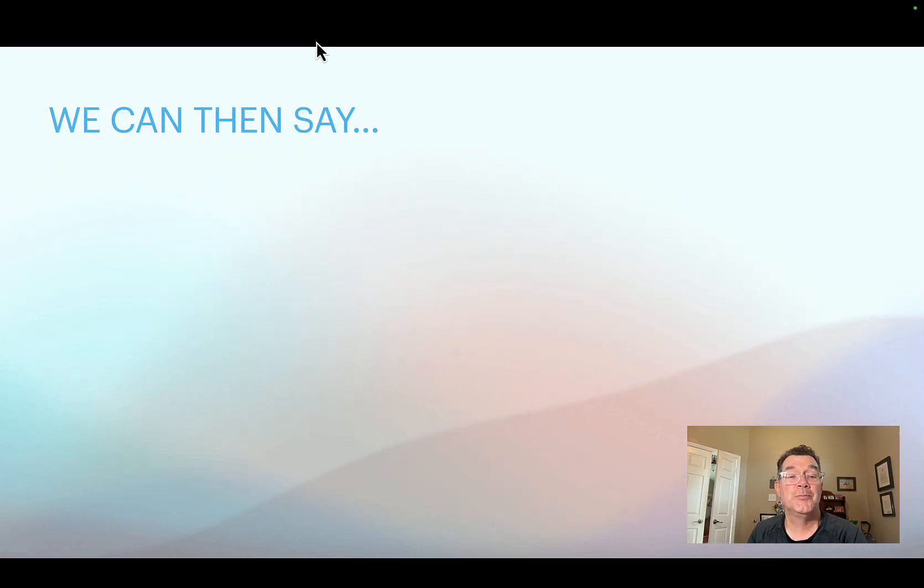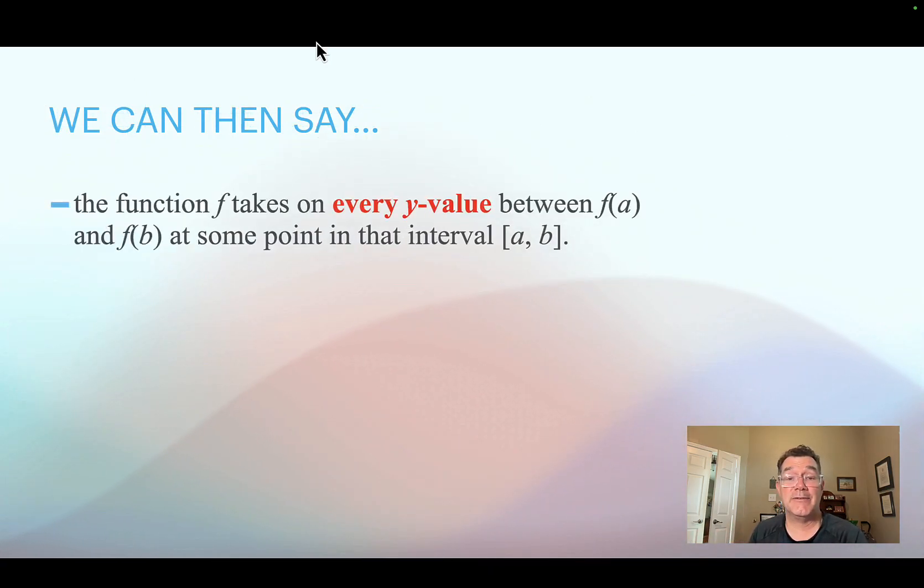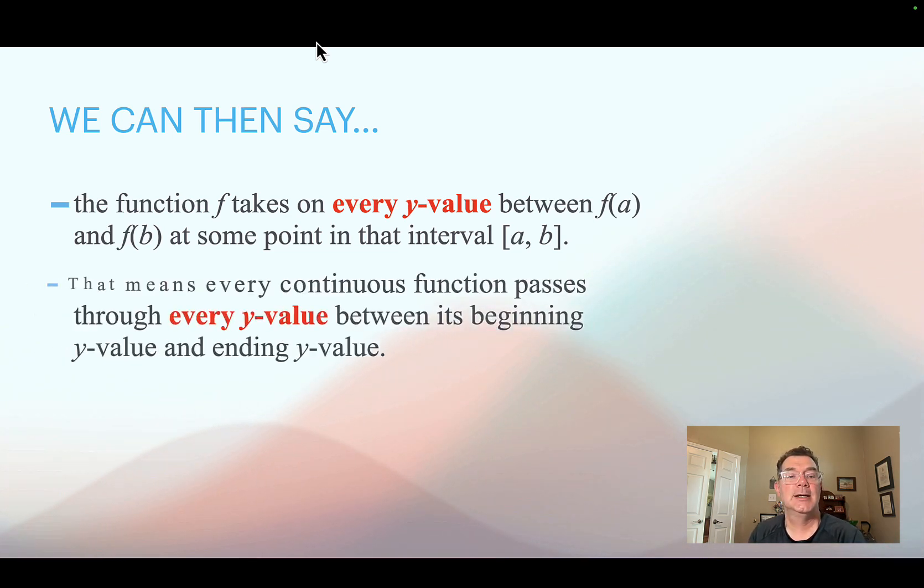Here's how we would do it. If a function is continuous, then if we start at a y-value of f(a) and we end at a y-value of f(b), then we're going to pass through every y-value between those two at some point between that a and that b, which are x coordinates.